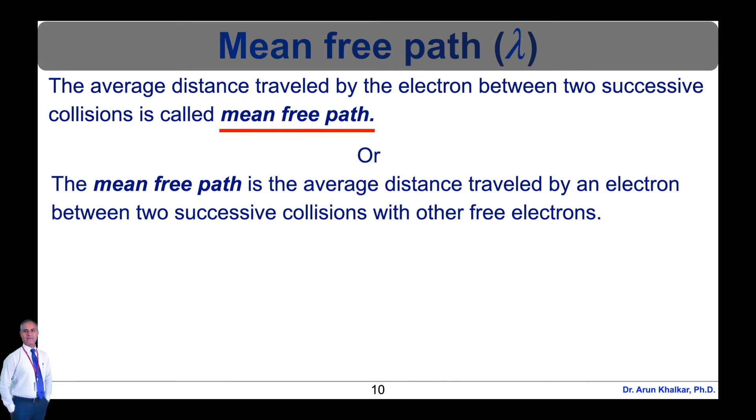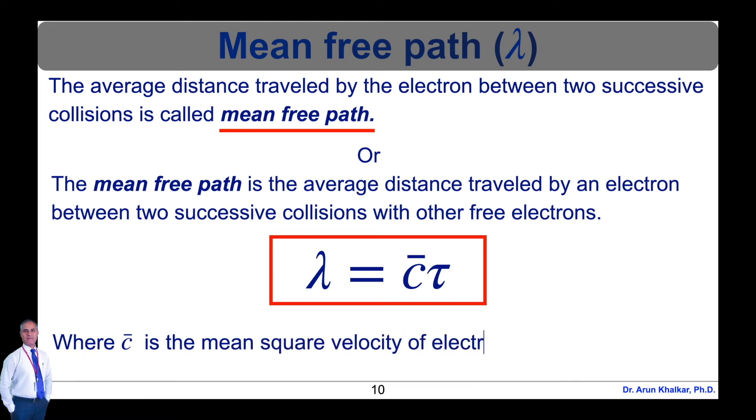Or the mean free path is the average distance travelled by an electron between two successive collisions with other free electrons. Therefore, lambda equals c bar tau, where c bar is the mean square velocity of electron which can be written as c bar equals square root of 3 Kb T upon M, where Kb is Boltzmann constant, T is temperature, and M is mass of an electron.